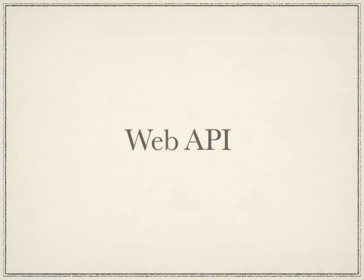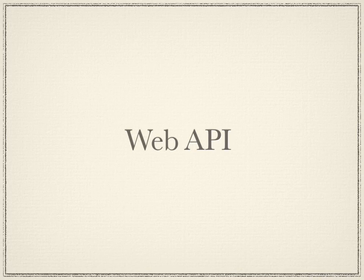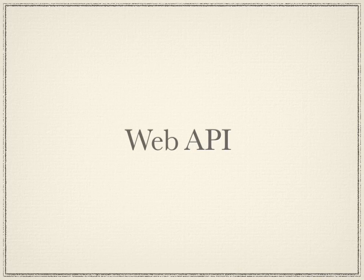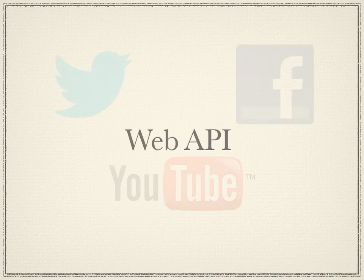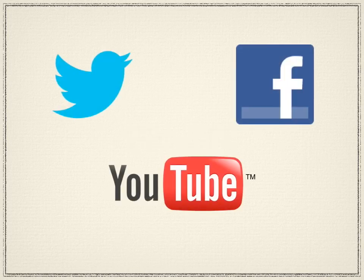Now you know what an API is, I should talk about web APIs, which is the actual content of this talk. To translate from API to web API, it's really the same thing but with a web service. Things like Twitter, Facebook, and YouTube all have ways of accessing their data without requiring you to know how the back end works. A web API is typically defined as a set of HTTP requests structured so you can get access to the things you want, post data, or do whatever you need.